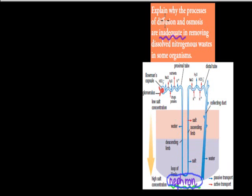So I'm going to go over the actual syllabus dot point. It says: explain why the processes of diffusion and osmosis are inadequate in removing dissolved nitrogenous waste in some organisms. 'Inadequate' just means not good enough. So explain why diffusion and osmosis by themselves are not good enough in removing dissolved nitrogenous waste in some organisms.